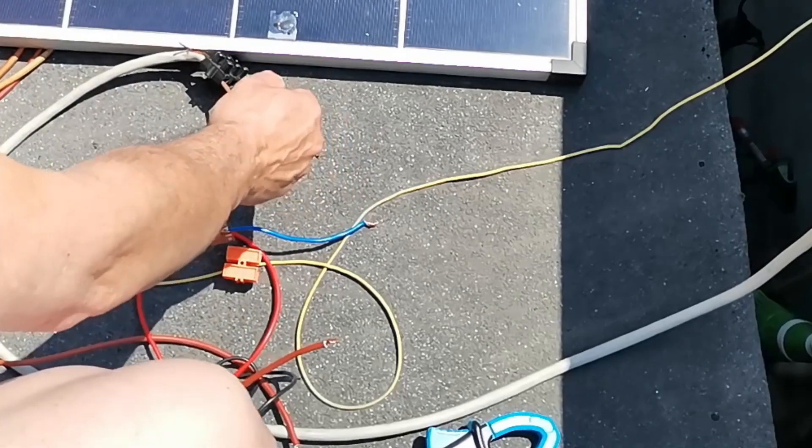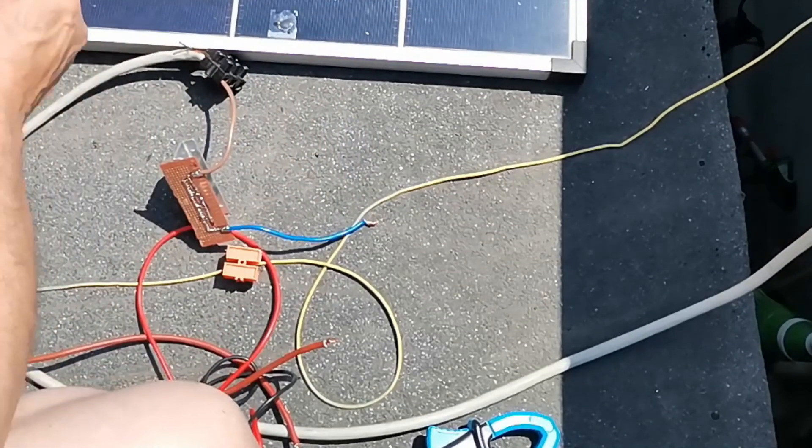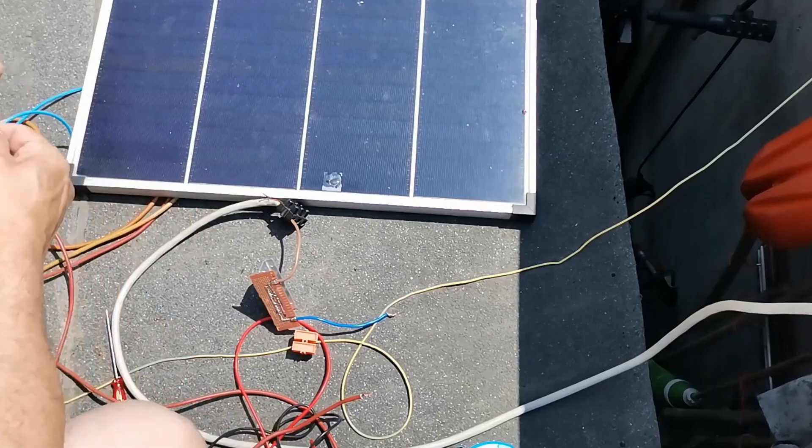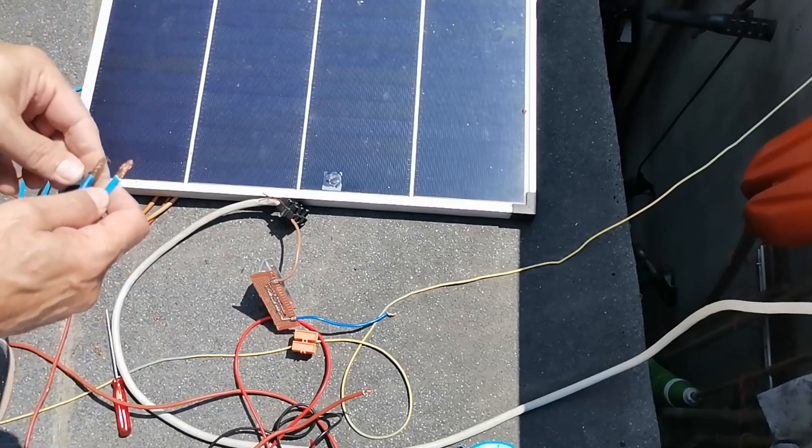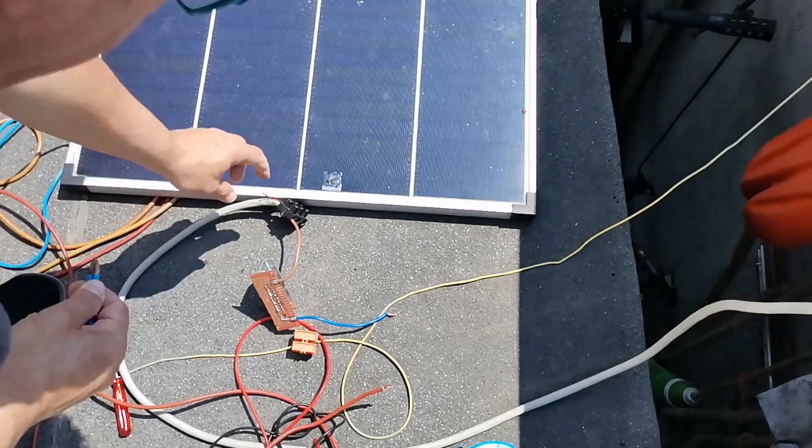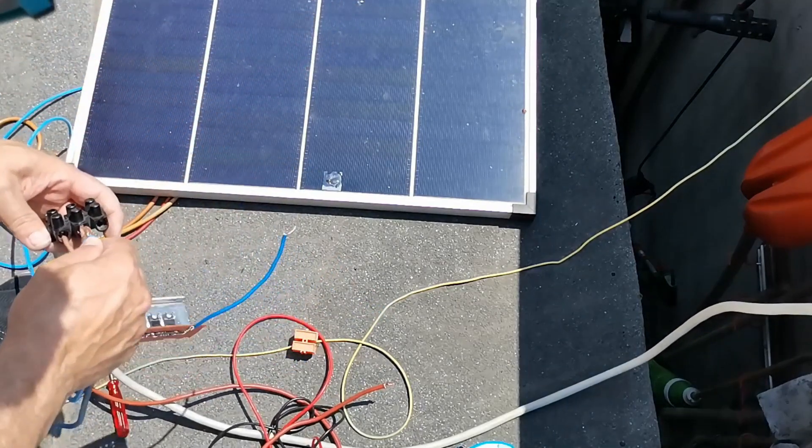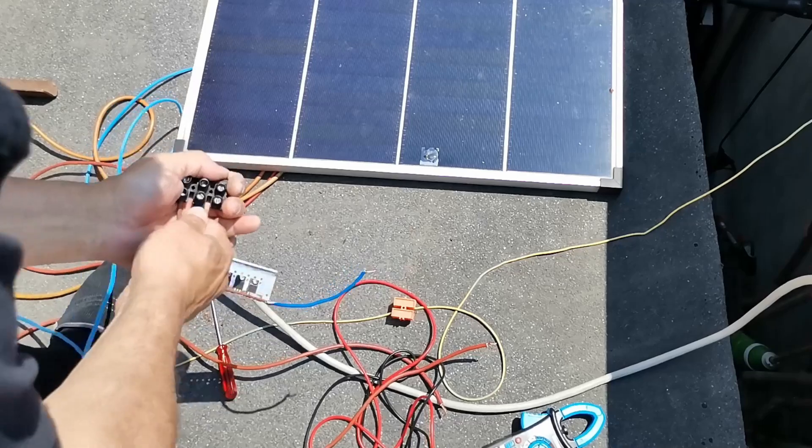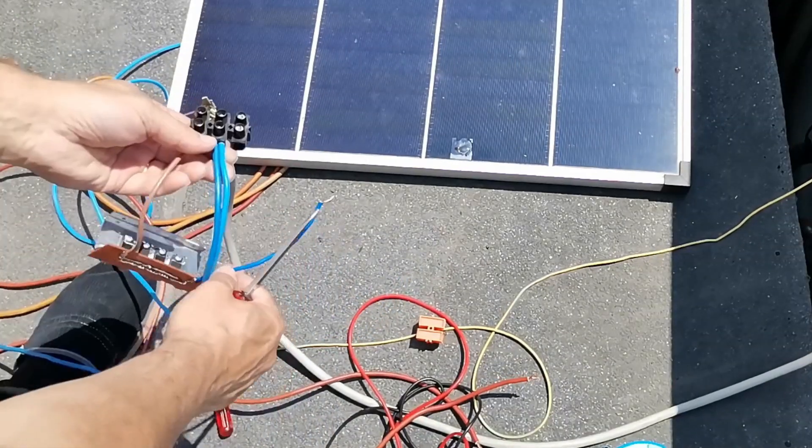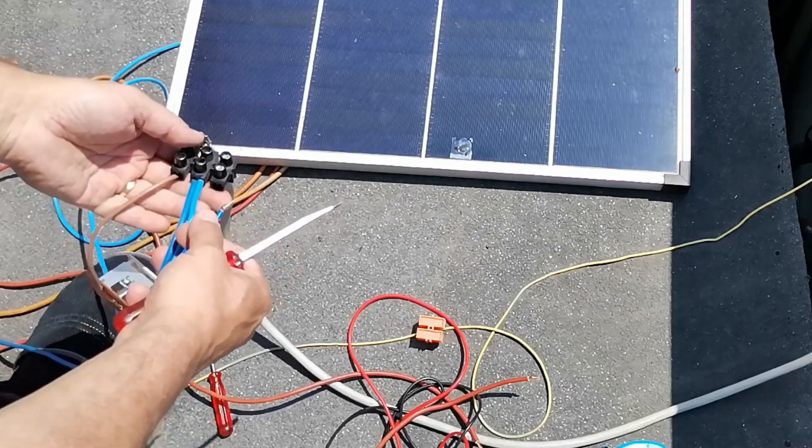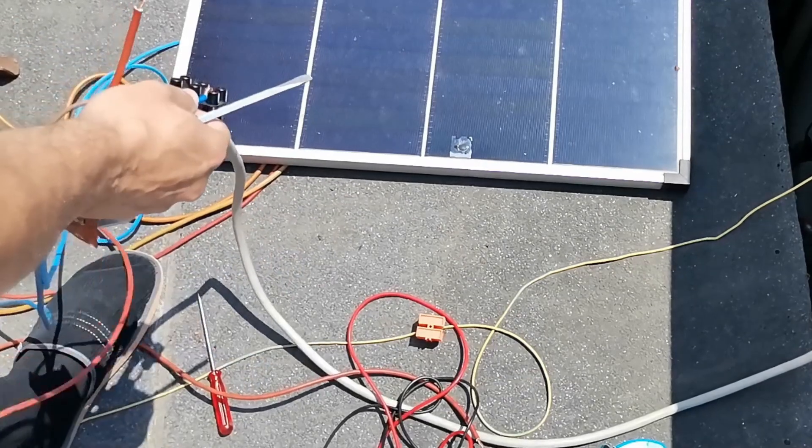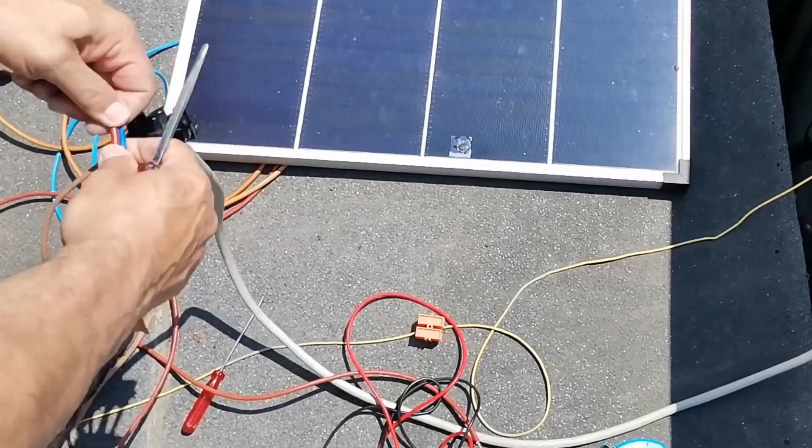All we have to do now is to have the minuses together, the output going to the MPPT. This is done. Here we should have the pluses from the panel and from the other homemade panel, very nice.